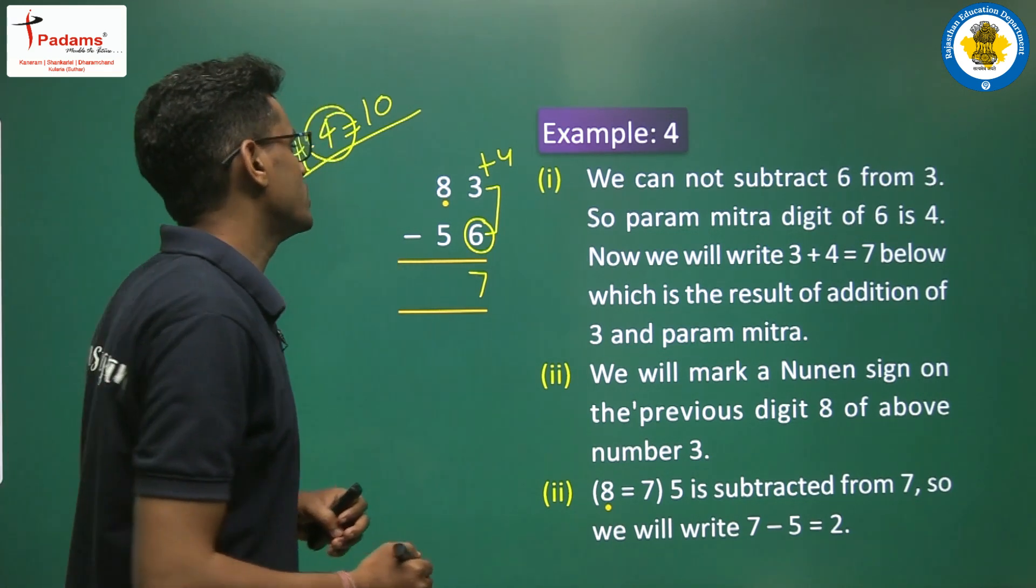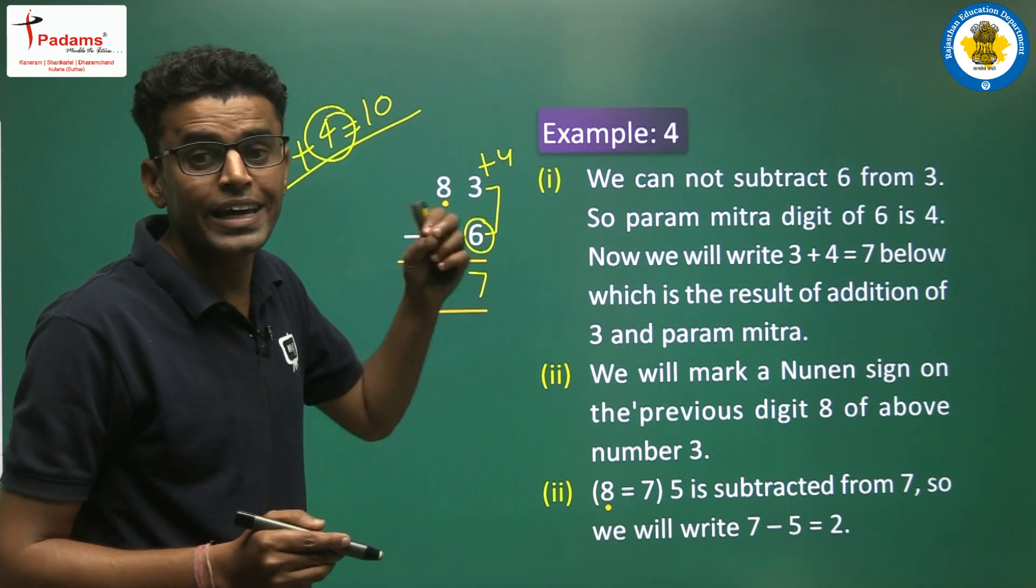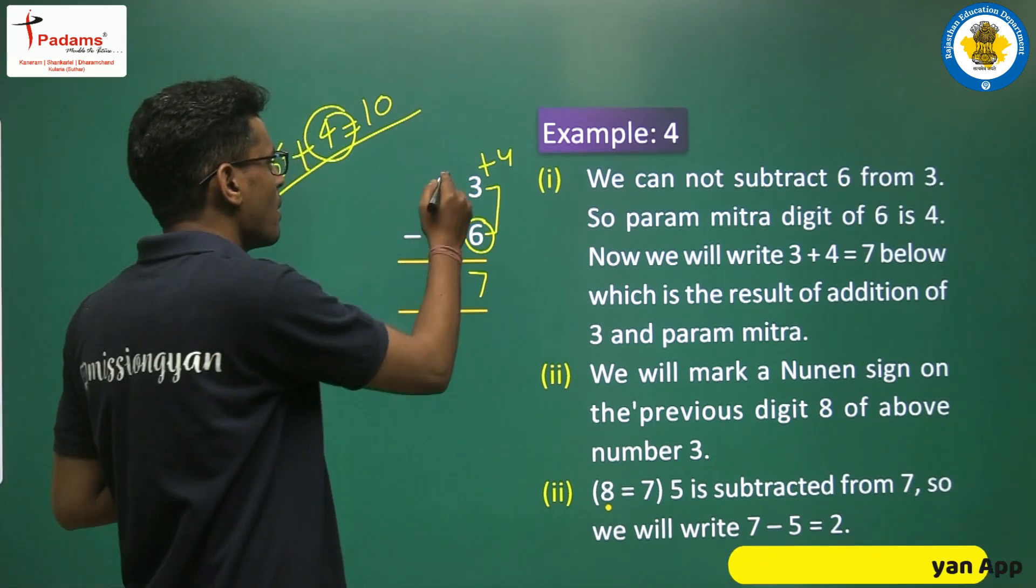In the next step, you put a downside dot symbol that will indicate the Eka Nunaen method.